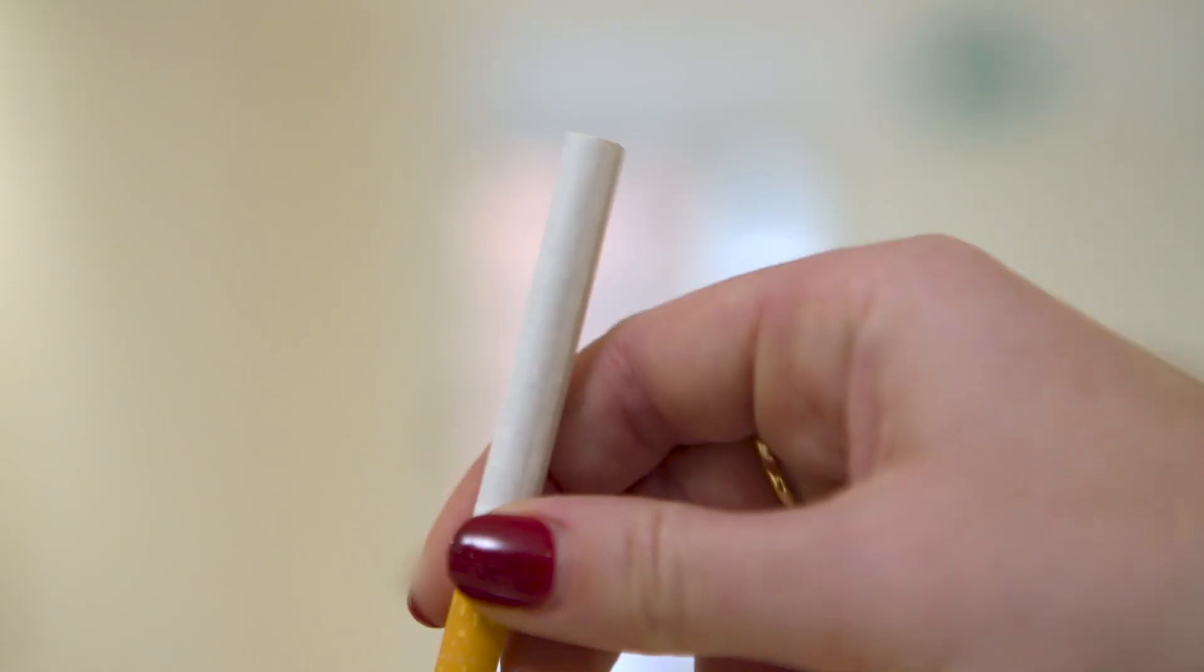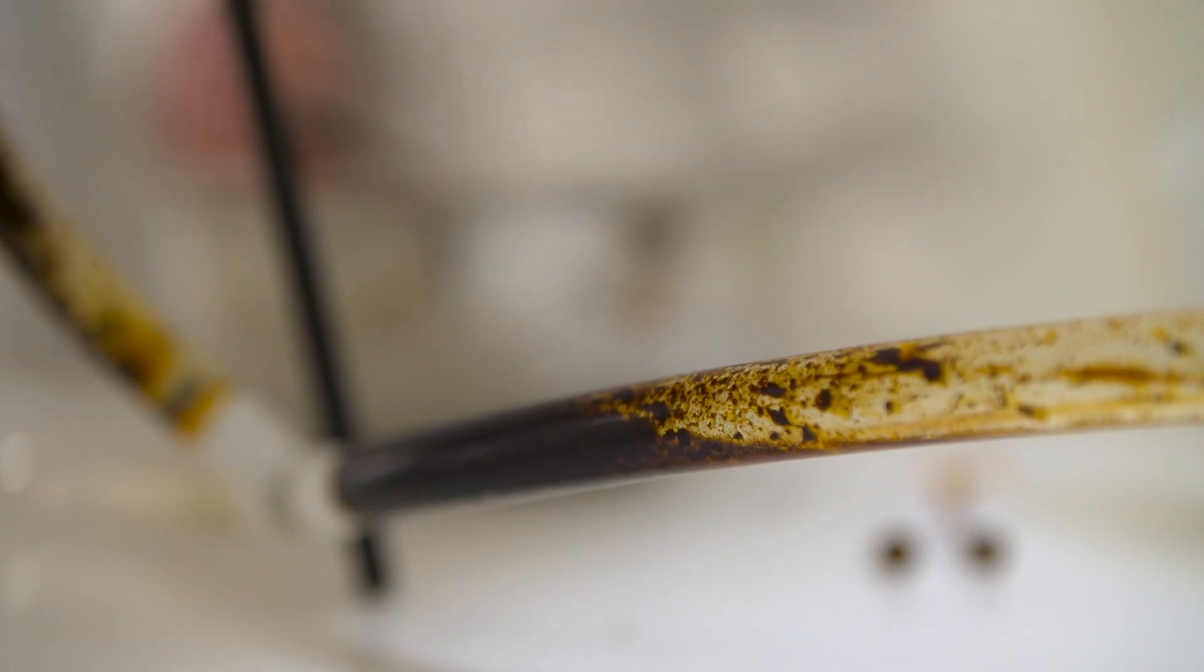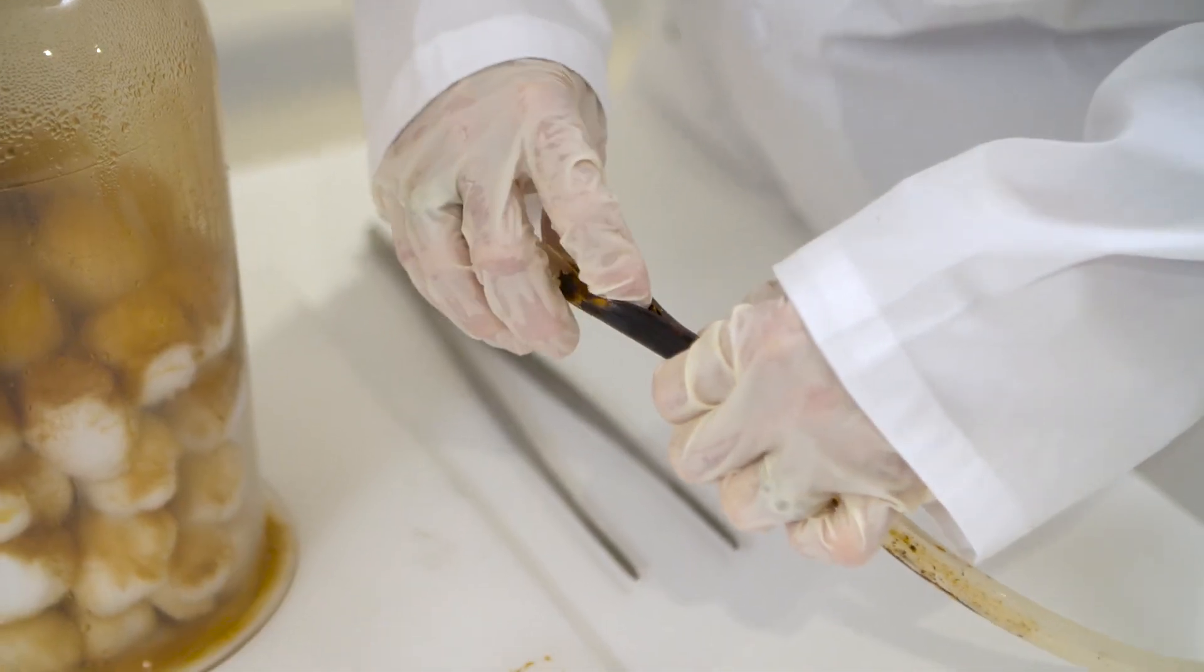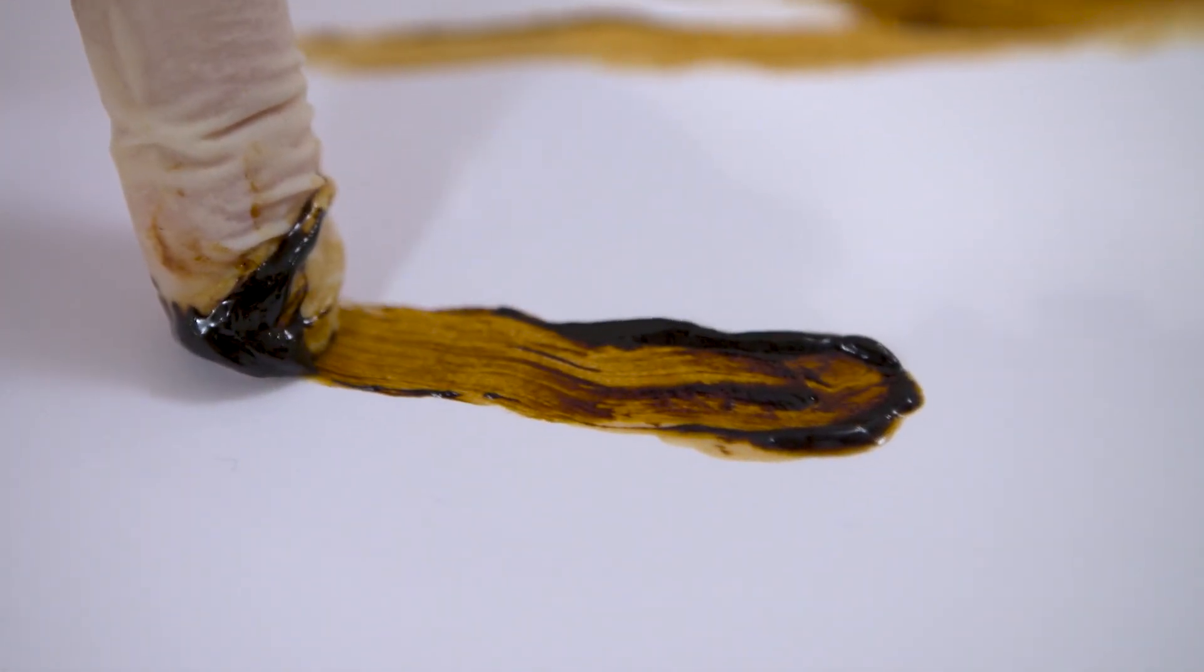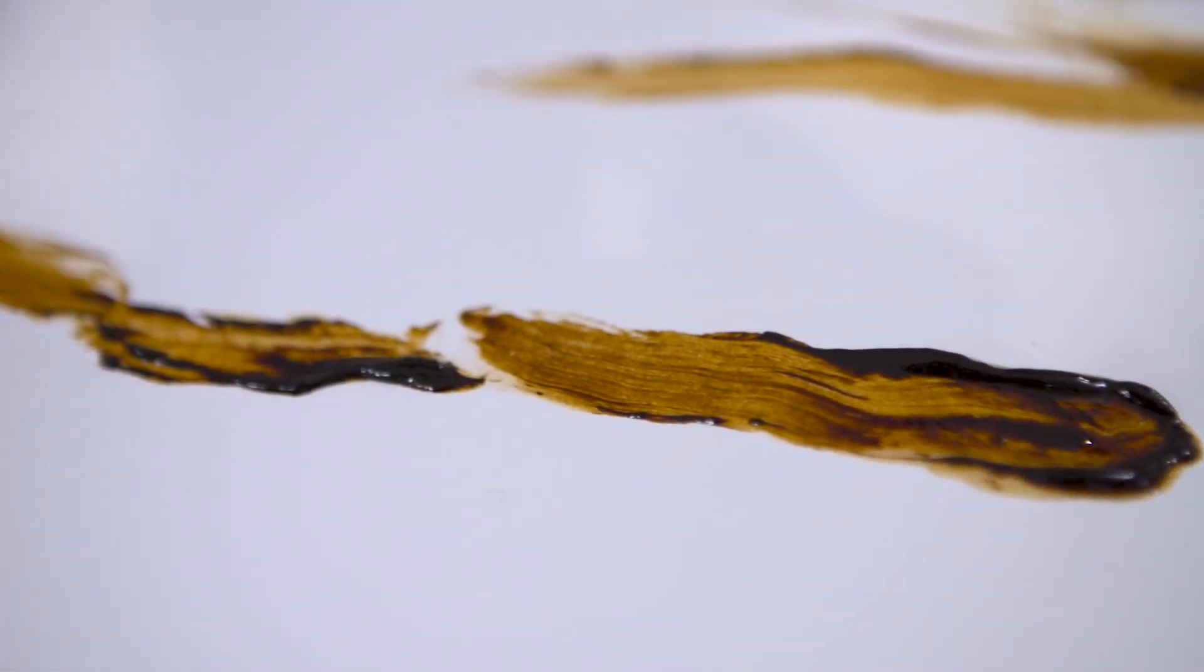So this experiment shows that every cigarette you smoke causes tar to enter your body. And it's the tar that contains the poisonous chemicals that spread through the bloodstream, which are linked to diseases such as heart disease, stroke and cancer.